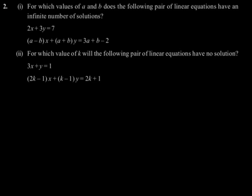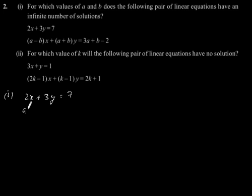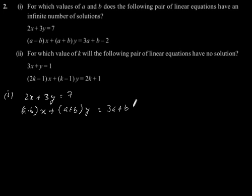Exercise 3.5, Question number 2, first part: for which value of A and B does the following pair of linear equations have an infinite number of solutions? The equations are 2x plus 3y is equal to 7, and (A minus B)x plus (A plus B)y is equal to 3A plus B minus 2.